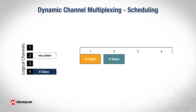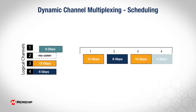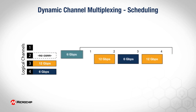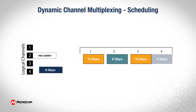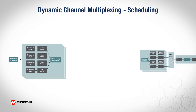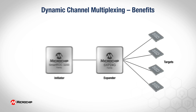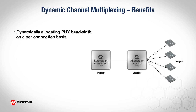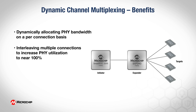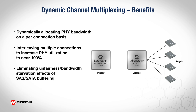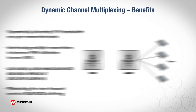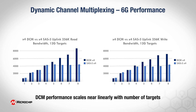This example shows two 6 gigabit per second connections combined with one 12 gigabit per second connection on the same DCM link. In this case, while the 6 gigabit per second channels are transmitted once, the 12 gigabit per second channel is transmitted twice before the sequence repeats. The benefits of this design include dynamically expanding the number of channels serviced per PHY, dynamically allocating PHY bandwidth on a per-connection basis, interleaving multiple connections to increase PHY utilization to near 100%, and eliminating the unfairness and bandwidth starvation effects and store-and-forward needs of SAS/SATA buffering.